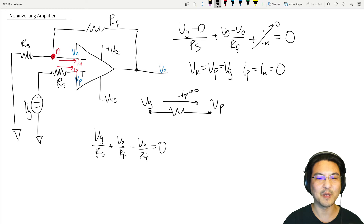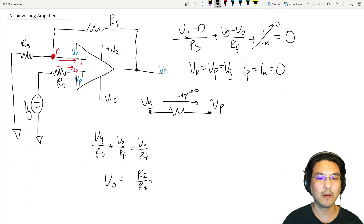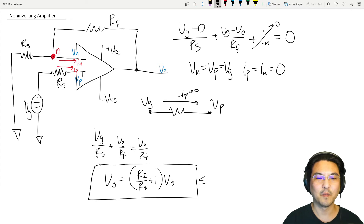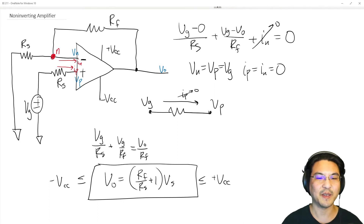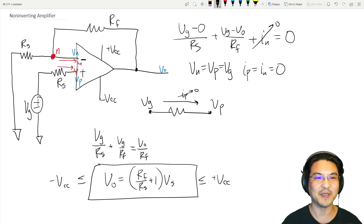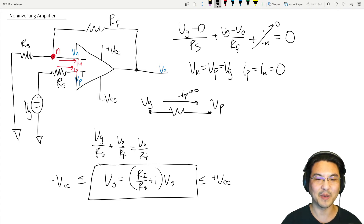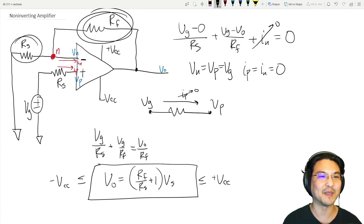Now let's get an expression for the output. Substituting v_n = v_g into the KCL equation and solving, the output voltage is v_o = v_g times (1 + R_f / R_s). Note that the output is limited by the power supply. Also notice the output is not inverted: if the input is positive, the output is positive, and the gain is based on the ratio of the feedback resistor to R_s.